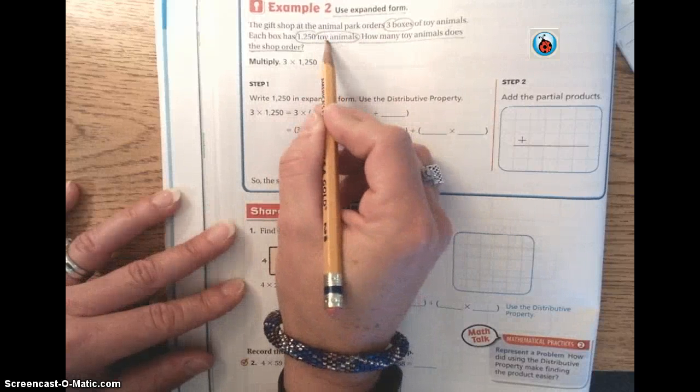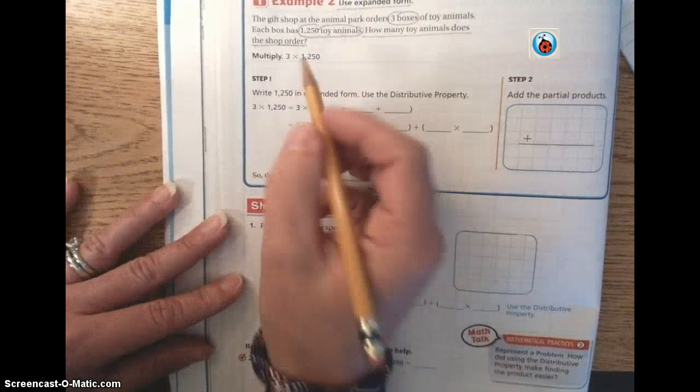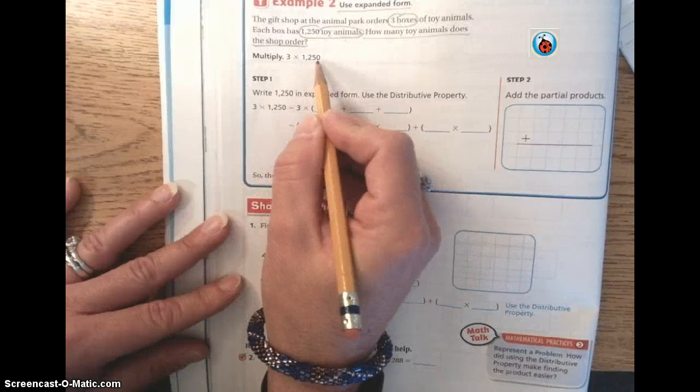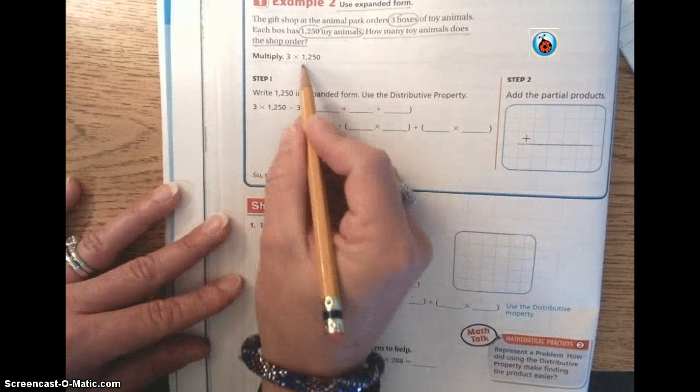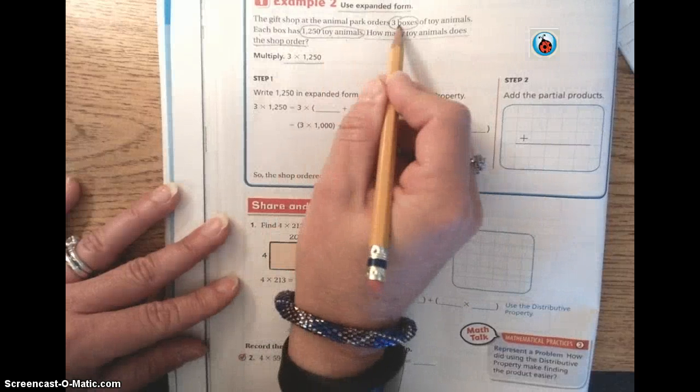So each box has 1,250. They order three boxes. So our multiplication problem is going to be three times 1,250. Those numbers are from the problem here.